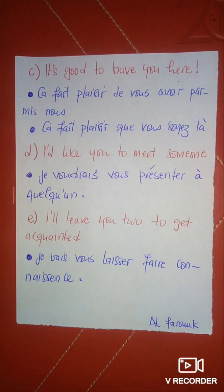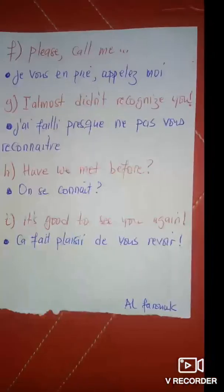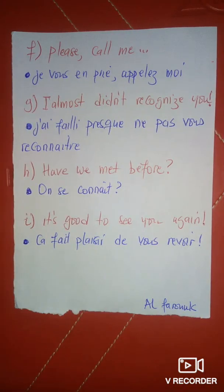La phrase en anglais pour dire cela c'est : « I'll leave you to get acquainted. » « To get acquainted » c'est faire connaissance en anglais. La phrase F : « Please call me. » La traduction : si vous en prie, appelez-moi — ou bien : appelez-moi, je vous en prie — ou s'il vous plaît, appelez-moi. Tout ça peut aller.